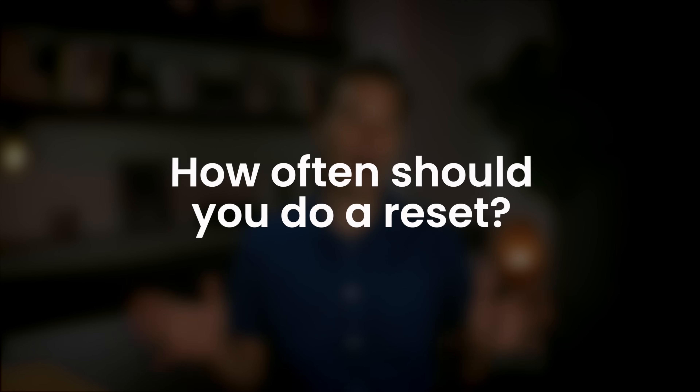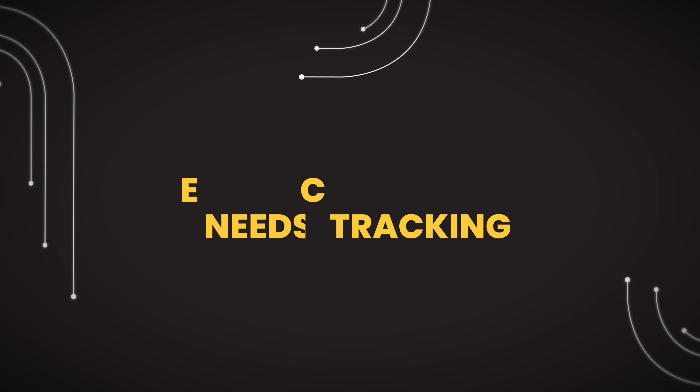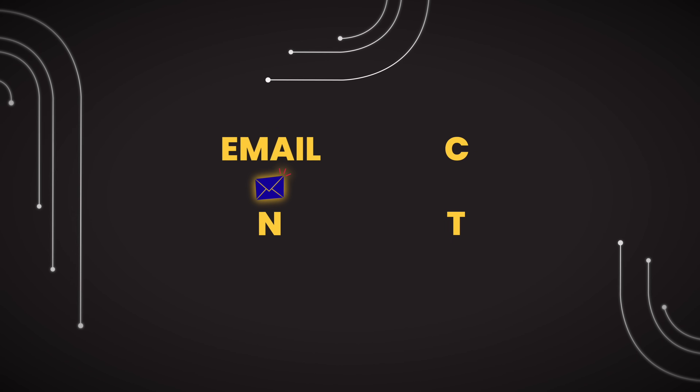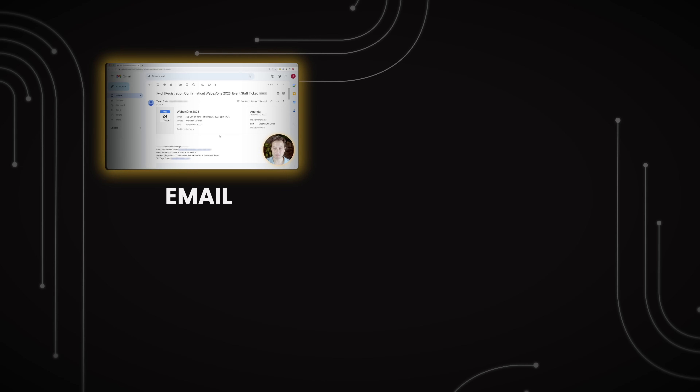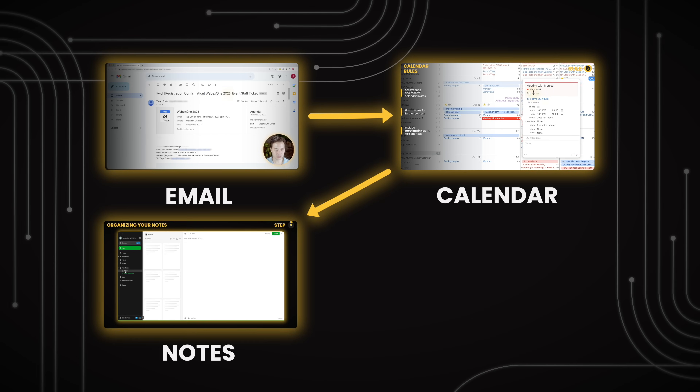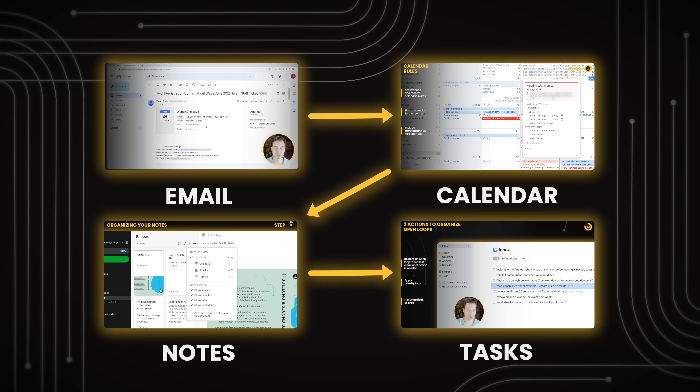Finally, how often should you do this reset? I do a version of this reset every week as part of my weekly review — a quick, standardized process every Sunday to clear all accumulated information and set priorities for the coming week. A weekly reset ensures you don't roll digital clutter from one week to the next like an accumulating snowball. Check out the blog post linked in the video description for a walkthrough of my weekly review. You might also want to do a more fundamental reset about once a year, or whenever those indicators discussed earlier start creeping up again.